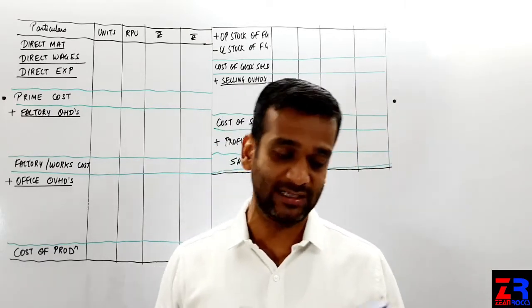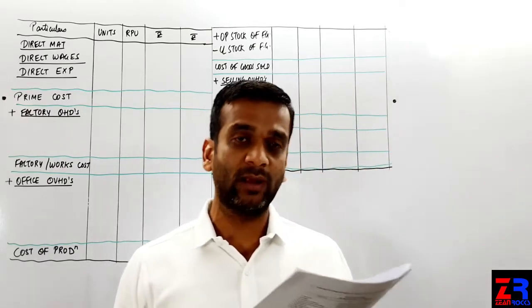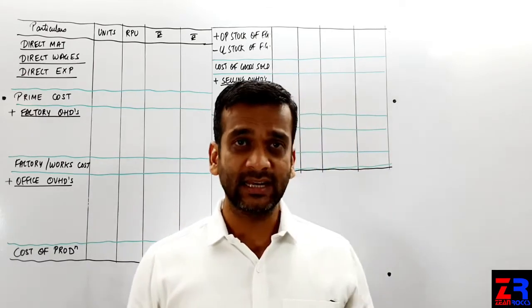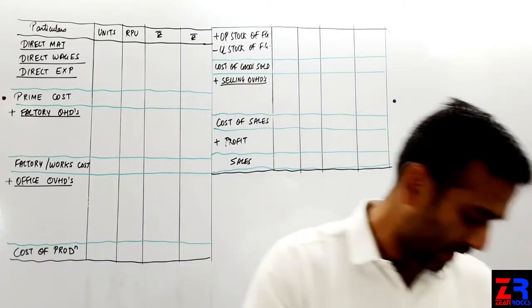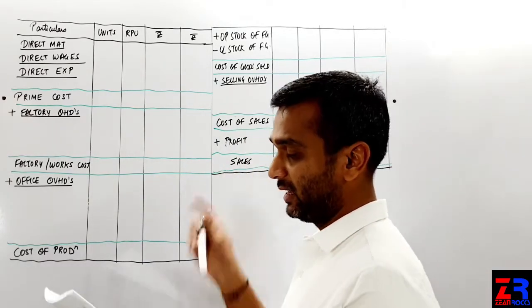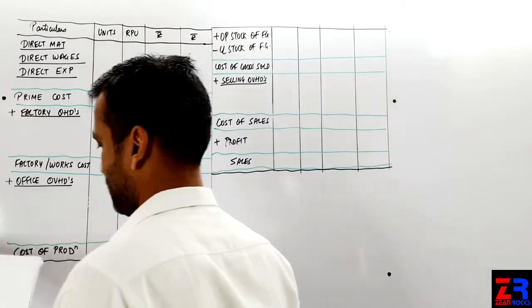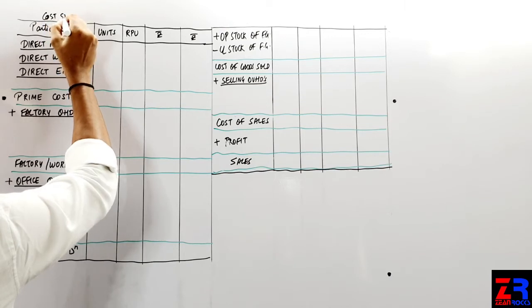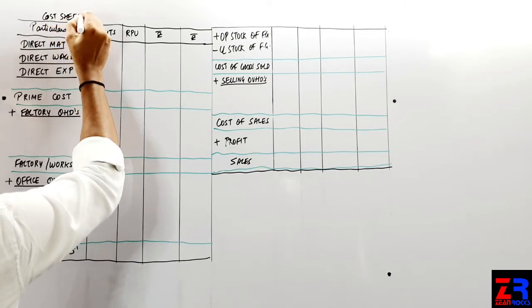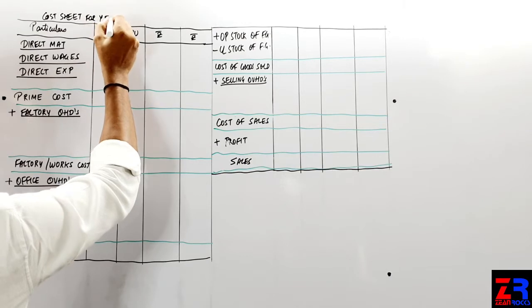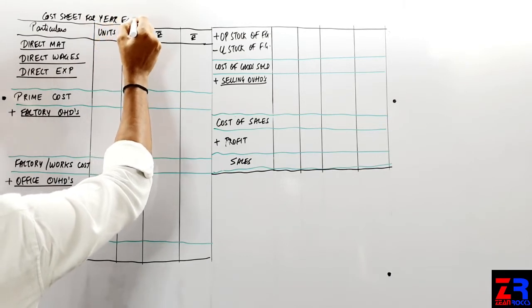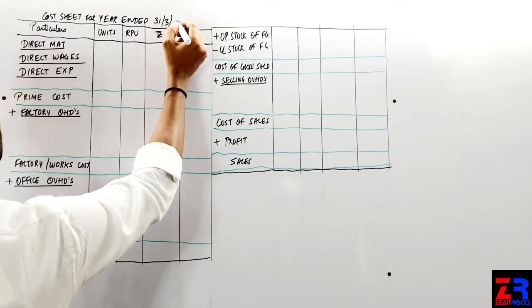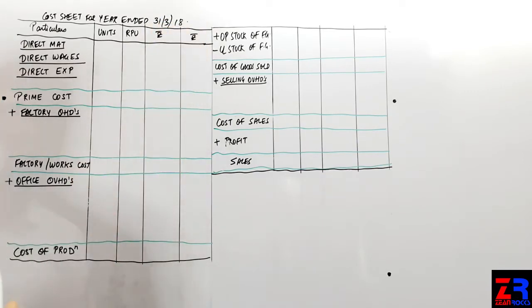Start karne se pehle, first write in the books of Deepak Limited, cost sheet for the year ended 31st of March 2018.